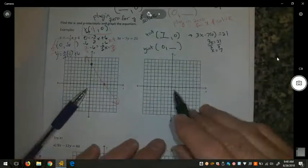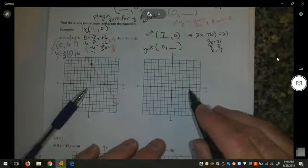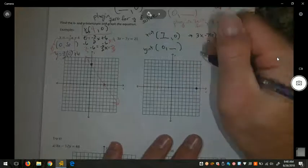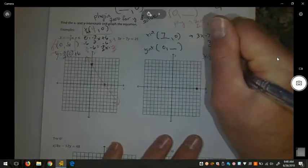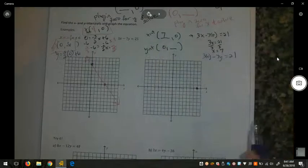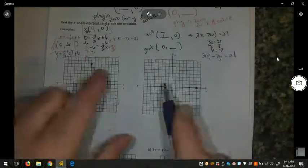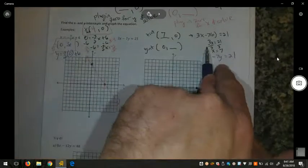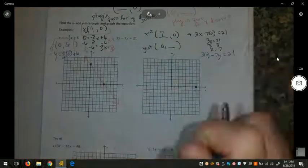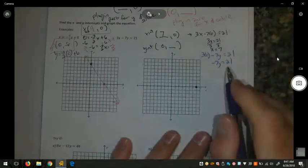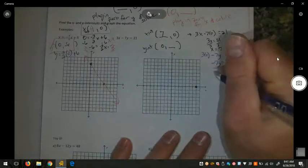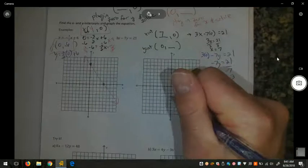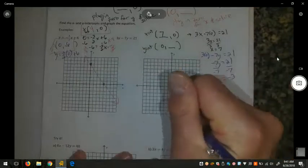So, my x-intercept is 7, 0. 7, 0 is right here. For my y-intercept, I plug in 0 for x. 3 times 0 minus 7y equals 21. Again, if it's in standard form, you could use what's called cover-up method, because 3 times 0 will be 0. We're left with the equation, negative 7y equals 21. Divide by negative 7. y equals negative 3. And then, we just connect our points.